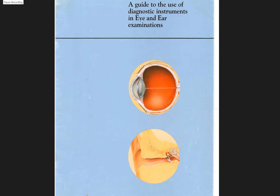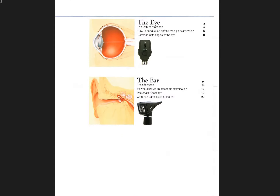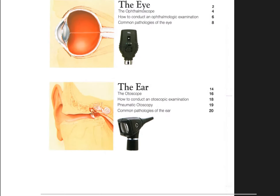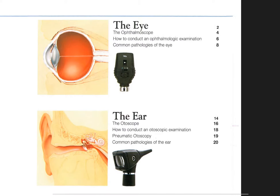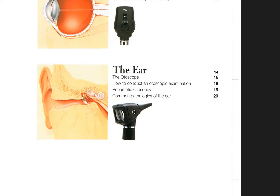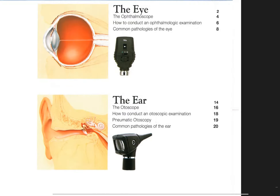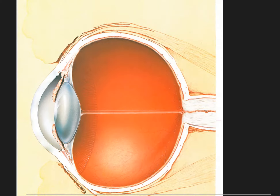This video covers some of the basics about doing an eye exam and an ear exam, showing both normals and abnormals. With the eye you're going to use an ophthalmoscope, and with the ear an otoscope. These are devices that look deep inside the eye and the ear.